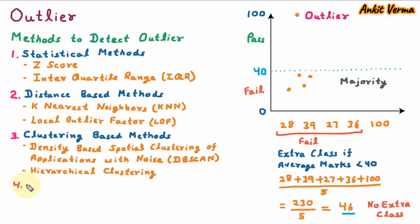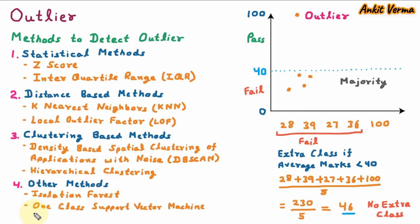In the fourth category, there are other methods to detect outlier. The first is isolation forest — it randomly isolates data points by splitting features and identifies the outliers which are isolated. The next is one-class support vector machine, also called OC-SVM — it creates a boundary around the normal data and identifies the outliers which are outside that boundary. So these are the methods to detect outlier.